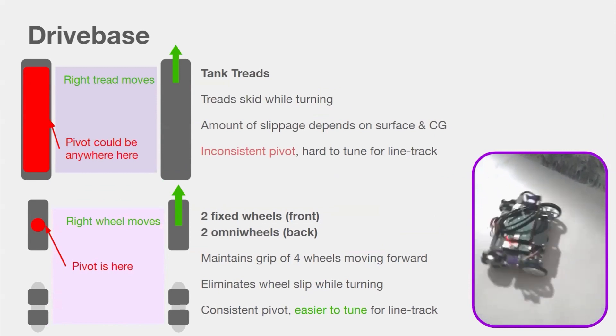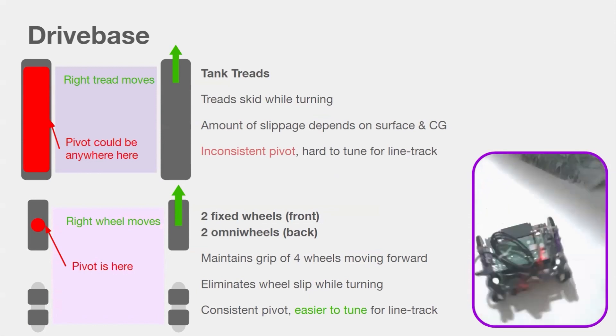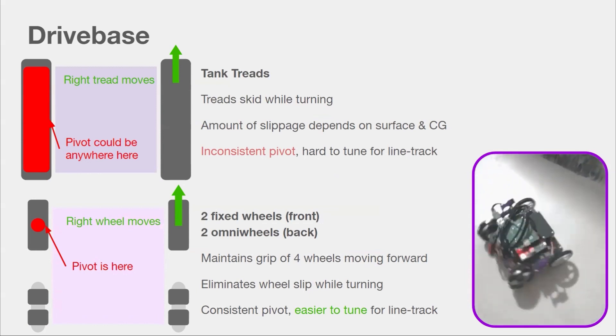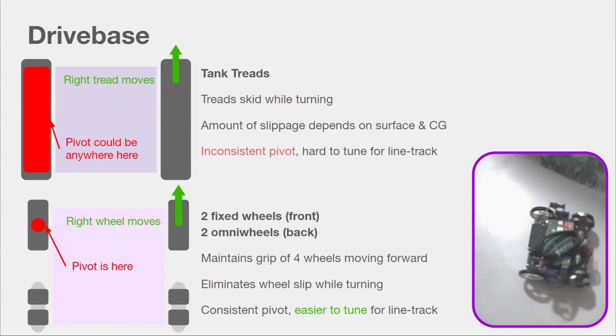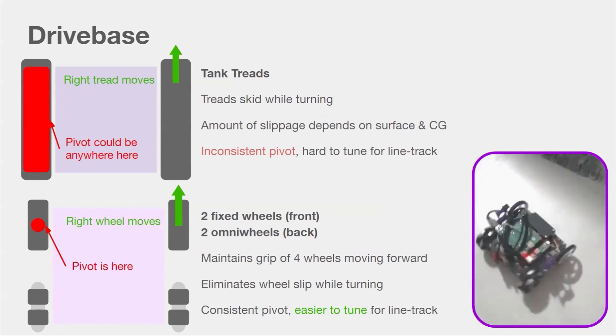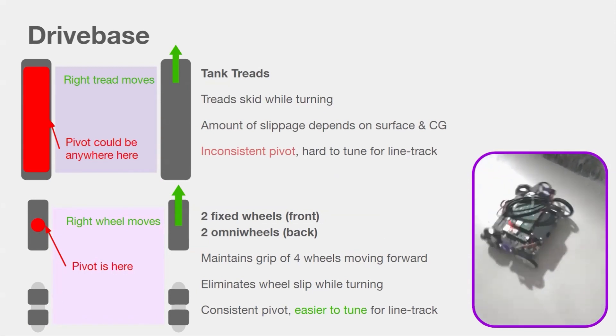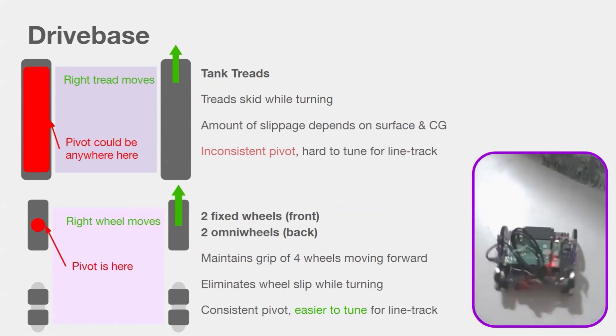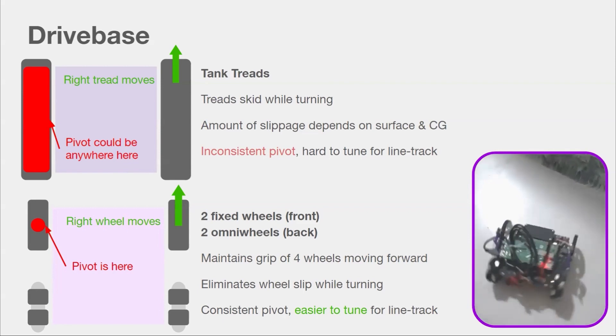Next decision was our drivetrain. With tank tracks from last year, the tracks must skid in order to turn. So if I move my right track forward, the pivot of turning could be anywhere on the left track, because the amount that the left track slips depends on the surface and center of gravity of the robot, which can vary, making it hard to tune for line tracking. This year, we went with two fixed wheels at the front and two omni wheels at the back. It has the grip of four wheels, but because the back two wheels can move left and right freely, there is no slippage, so the robot pivots like a two-wheeled robot, and the pivoting behavior is consistent, making it easier to tune.